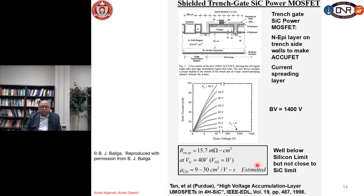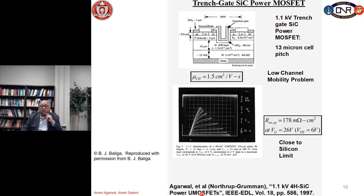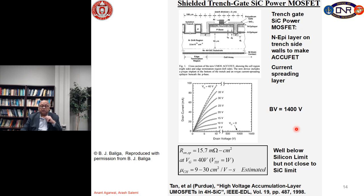Professor Jim Cooper's group from Purdue presented a structure in 1998 where they put a P+ shield under the trench. When you ground it, as shown in Professor Baliga's patent, this is very effective in shielding the field at the corner. They had a 1400 V MOSFET that worked very well with much lower on-resistance of 15.7 milliohm·cm², with estimated channel mobility between 9 and 30 cm²/V·s. Compared to the 178 milliohm·cm² I had obtained, the Purdue result is much better just one year later — you can see how quickly the field evolves.